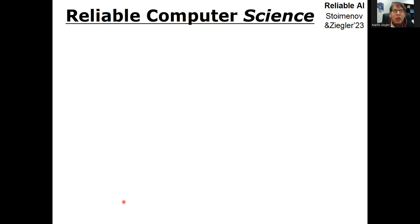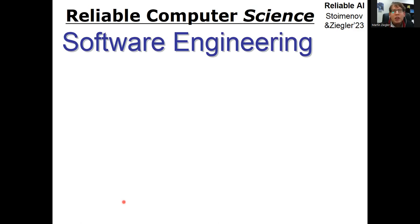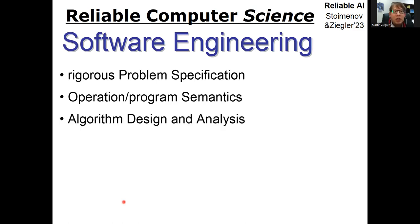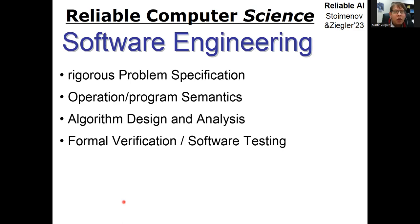Because computer science has arguably achieved impressive reliability in the classical realm — meaning classical software engineering. Software engineering reliability builds on several core principles, such as rigorous problem specification, formal program or operational semantics, and algorithm design and analysis, as opposed to coding or hacking.